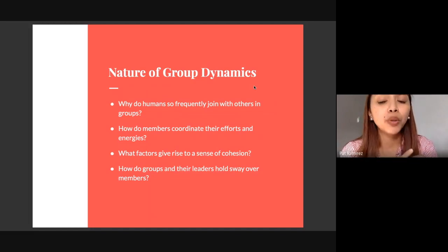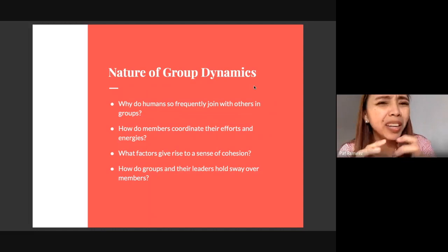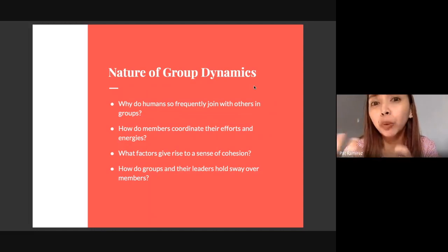Second, how do members coordinate their efforts and energy? In AC, collaboration is one of our core values, which falls under concepts of group dynamics. Next, what factors give rise to sense of cohesion? It's hard to call a group if there's no sense of unity or unison, no social identity or group identity.